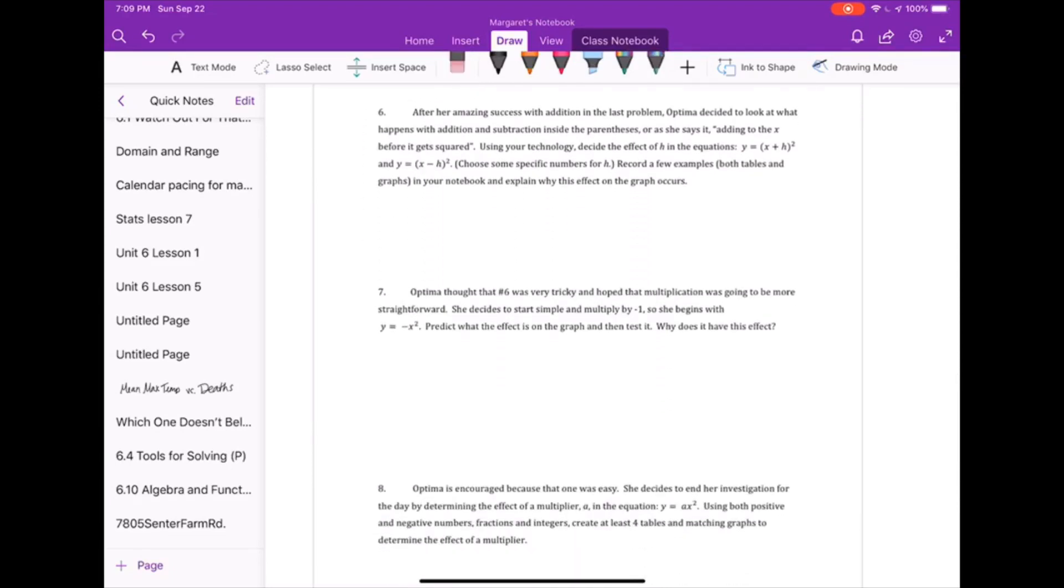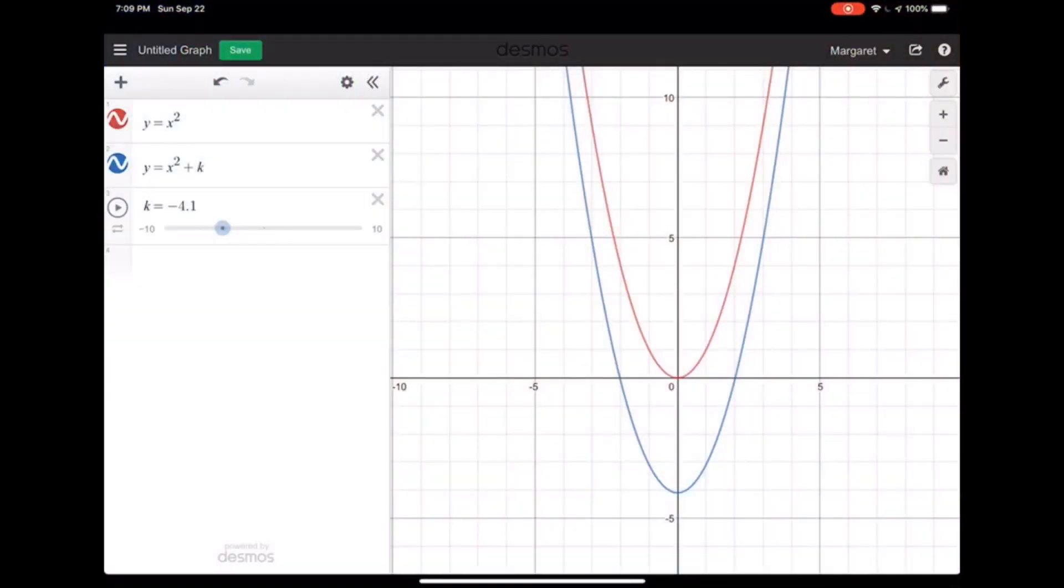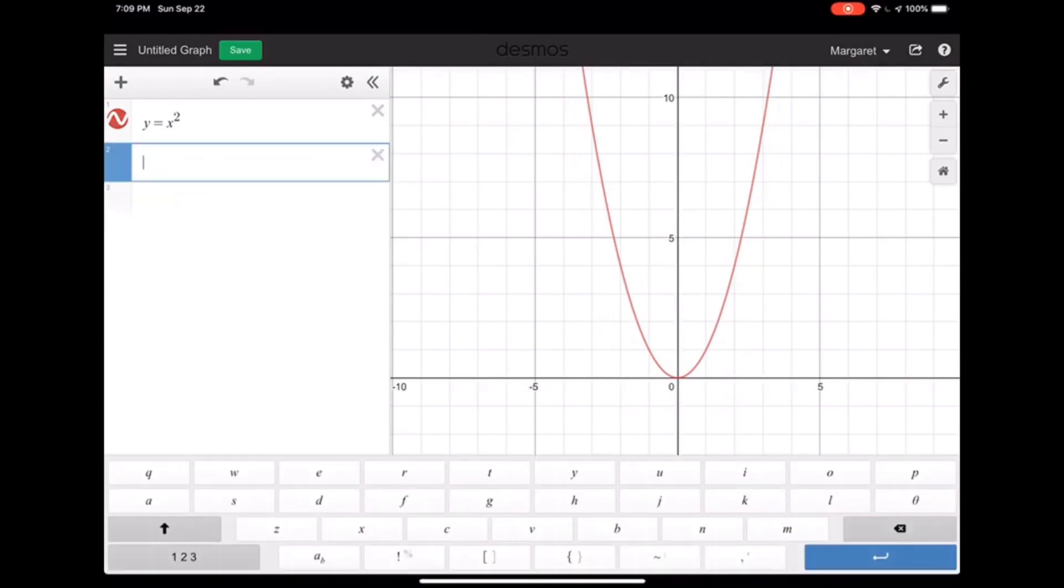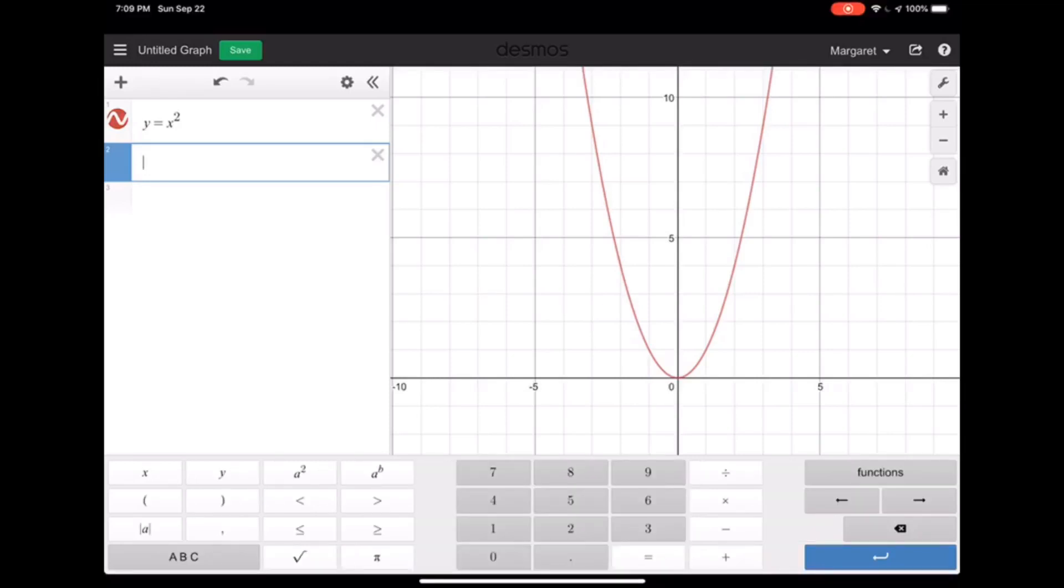So in number 6, Optima is looking at what happens when you add or subtract before x gets squared. Or in our original descriptions, the x plus 5 quantity squared. So what we're going to do is go look in Desmos and compare that x plus 5 quantity squared. So I'm going to keep my y equals x squared, so I always have something to compare to. Then I'm going to type in y equals parenthesis x plus 5 squared. And I'm going to see that the graph remains the same, but shifts left 5.